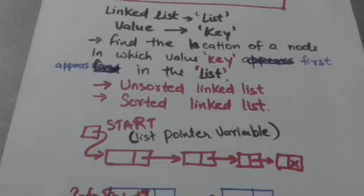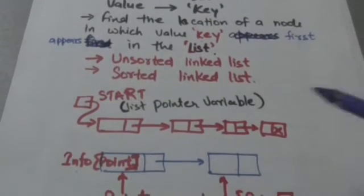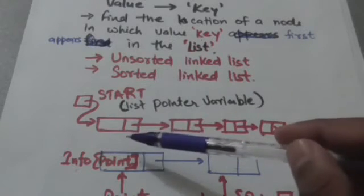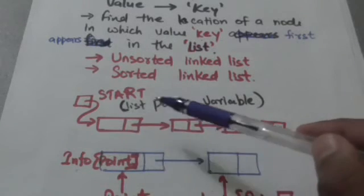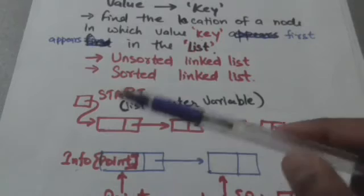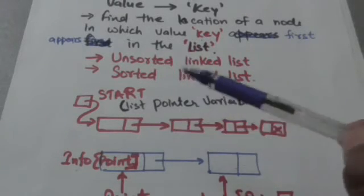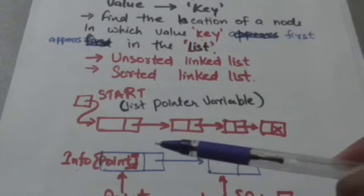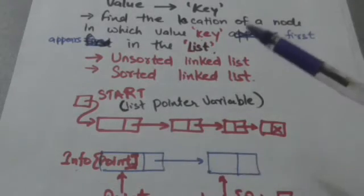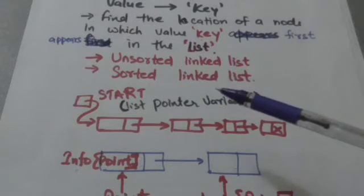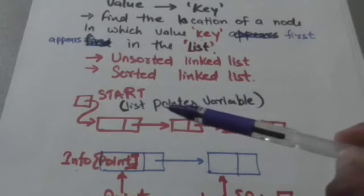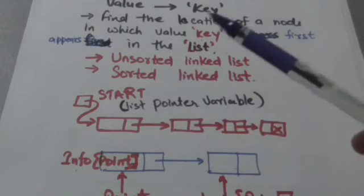In this tutorial we will discuss the searching algorithm in which it is not assumed that data are sorted in the linked list. In this algorithm, starting from the first node of the linked list, the content of each node will be compared with a given value one by one, until the content of a node matches with that given value.